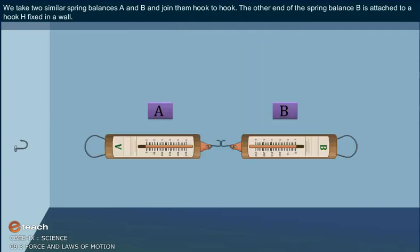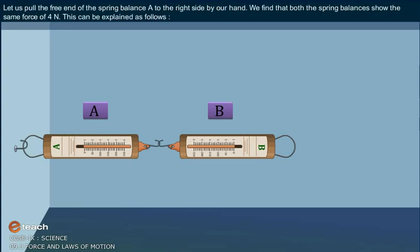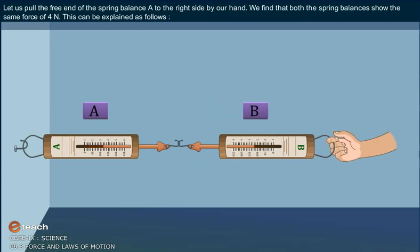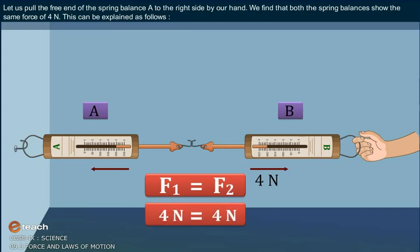The other end of spring balance B is attached to a hook fixed in a wall. Let us pull the free end of spring balance A to the right side by our hand. We find that both spring balances show the same force of 4 Newton.